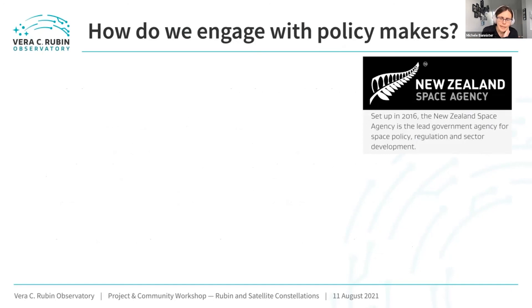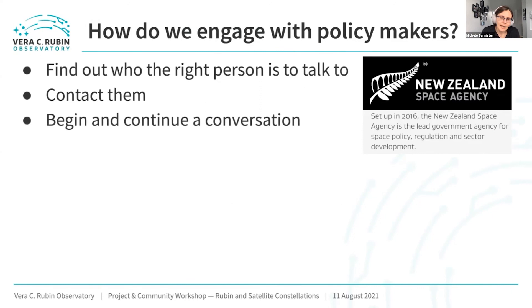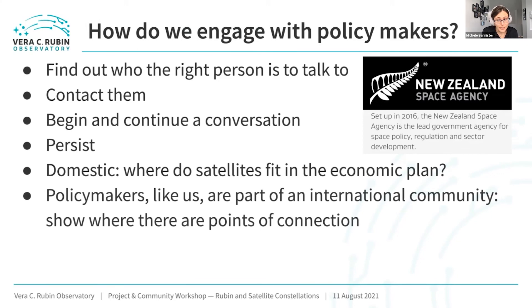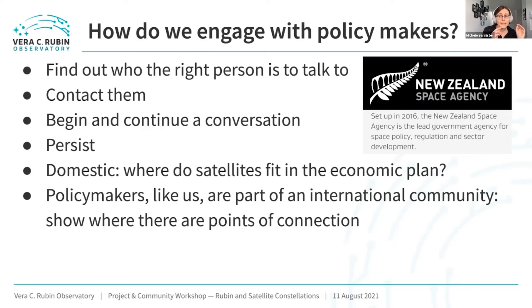In terms of the policymakers: figuring out who in your government is the right person to talk to — I'm speaking in a broad international context because we're an international community. Your research institute will quite often have someone whose job it is to figure out how to engage with government, like your research and innovation institute. They can help you find that person. Then have a conversation and keep having it — go back every couple of weeks. The persistence is quite key. One aspect is joining the dots for them on where satellites fit in the economic plan, and making sure both satellites and science are able to happen.